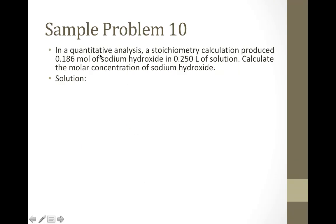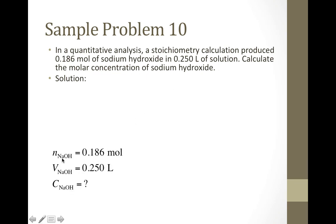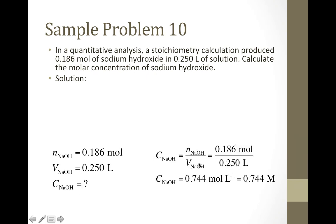Let's try a sample problem. In a quantitative analysis, a stoichiometry calculation produced 0.186 moles of sodium hydroxide in 0.250 liters of solution. We're asked to calculate the molar concentration. We know that molar concentration is equal to N over V, so we plug in our values: 0.186 moles divided by 0.250 liters gives a concentration of 0.744 moles per liter.